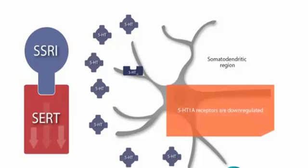This means that 5-HT1A receptors are downregulated. As a response to serotonin stimulation, the serotonergic neuron reduces the number of 5-HT1A receptors. This phenomenon is known as downregulation.